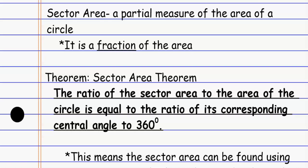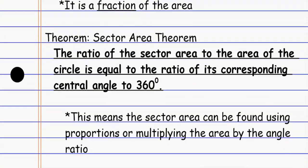We're comparing the ratio of the angles: the ratio of the angle we have over the entire circle — which is 360 — is going to be the same as the ratio of the sector area over the entire area. This means, just like with arc length, we can find the sector area by setting up a proportion, or we can multiply the area by the angle ratio. Either say it's a fraction of the whole area and multiply by that fraction, or say the partial area compared to the whole area is the same as the partial angle compared to the whole angle.